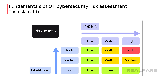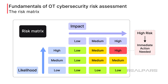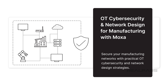Why generate this matrix? It allows you to easily identify risks that require immediate mitigation, such as all high-risk items, as well as those that can be deferred, such as those with a low risk. Companies have limited budgets for cybersecurity, so the highest risk issues should be addressed first. For a deeper understanding of OT network security, enroll in the course OT Cybersecurity and Network Design for Manufacturing with Moxa — you'll find the link in the video description.